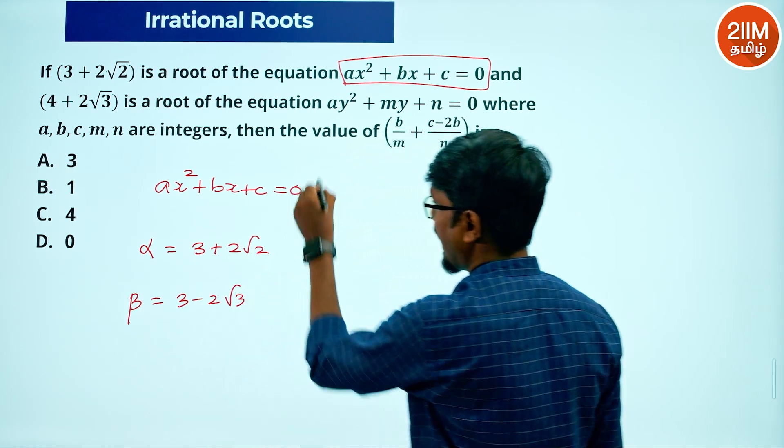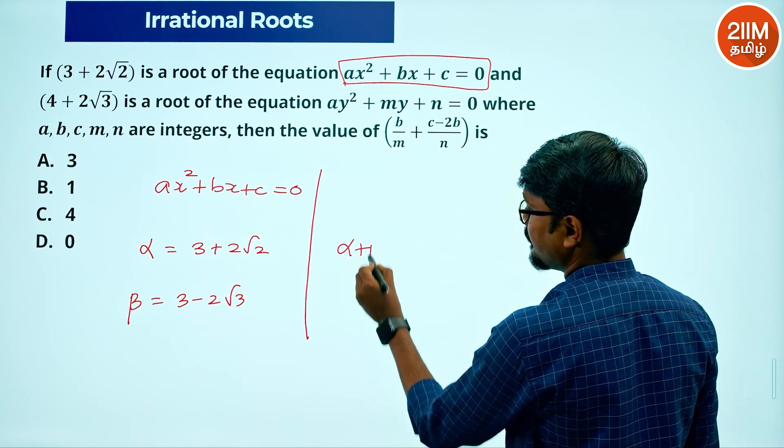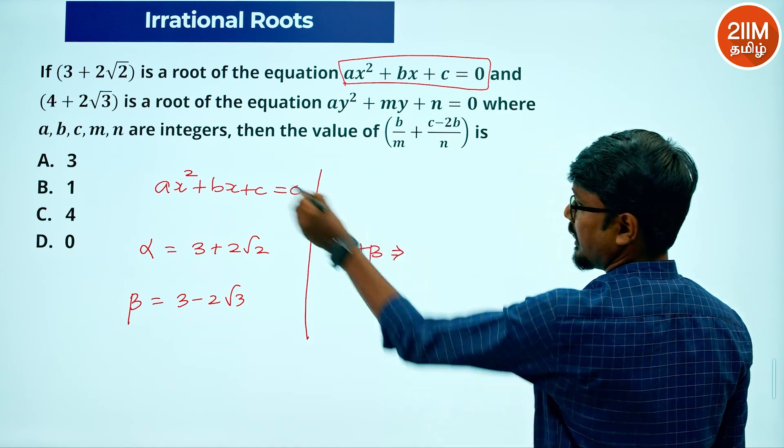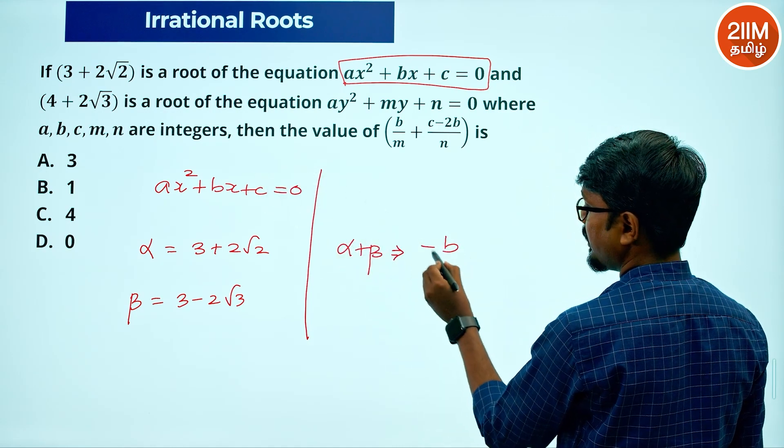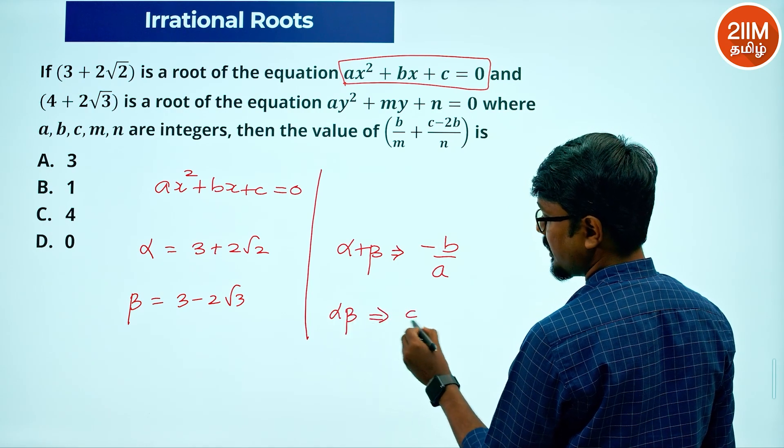It gives alpha plus beta and alpha beta. Alpha plus beta is sum of the roots, based on the equation minus b by a. Product of the roots, based on the equation, c by a.